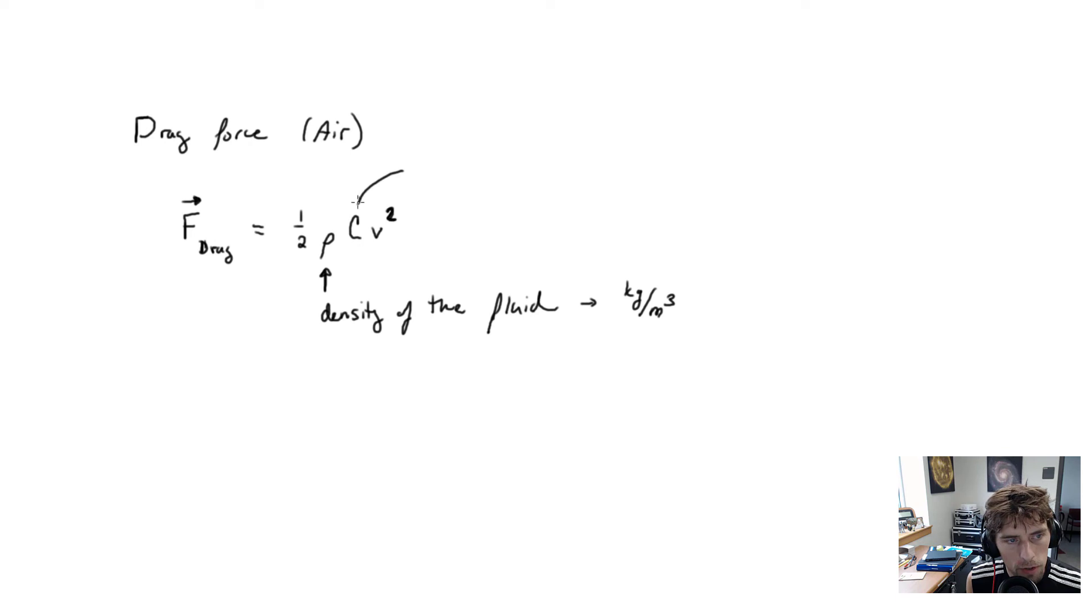Rho represents the density of the fluid. There's going to be a different drag acting on you if you're swimming in water versus flying through the air. This helps account for what material you're moving through. Density is usually given in kilograms per cubic meter. The c is the cross-sectional area. It depends on the geometry of the shape that's moving through the fluid. A porpoise is going to be better at cutting through water than a cardboard box. V is your velocity squared. The faster you move through the fluid, the more the fluid exerts a force, the more drag.